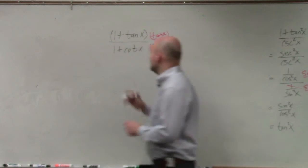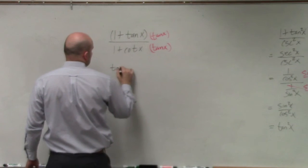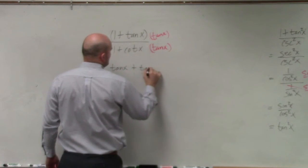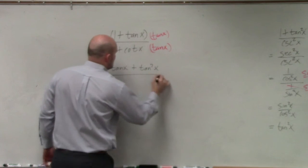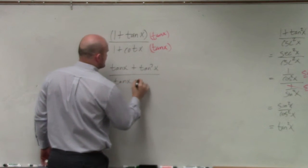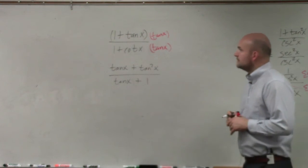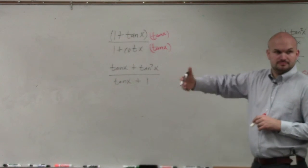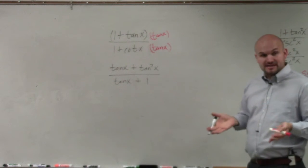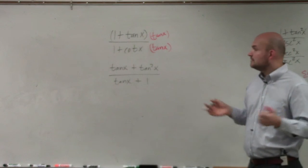So in doing that, I now obtain tangent of x plus tangent squared of x, all over tangent of x plus 1. I just did a distributive property. Tangent times cotangent is 1, right?